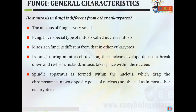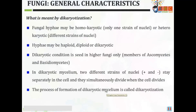The spindle apparatus is formed within the nucleus, which drags the chromosomes to the opposite poles of the nucleus — not the cell, as in most cases of eukaryotes.